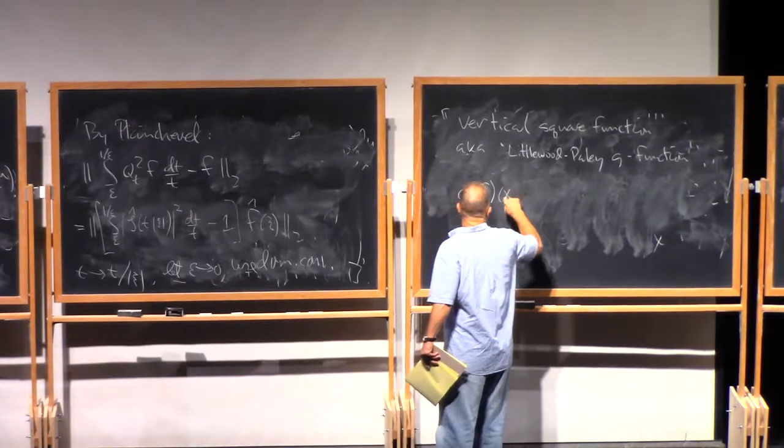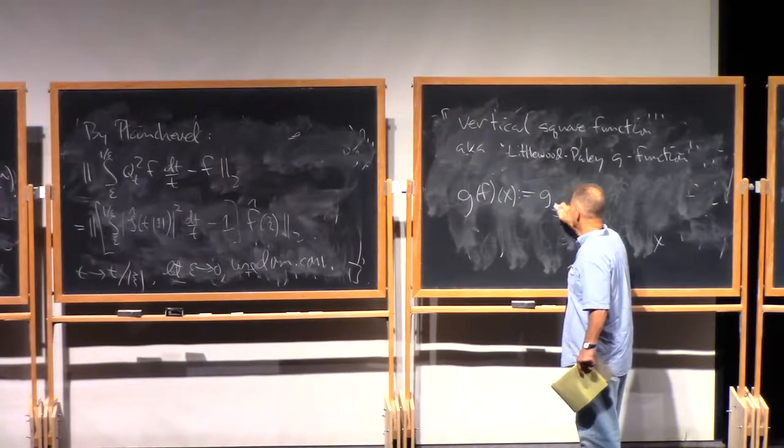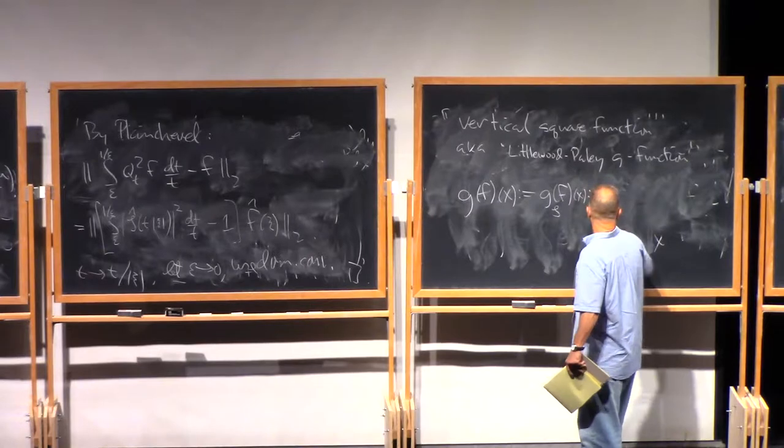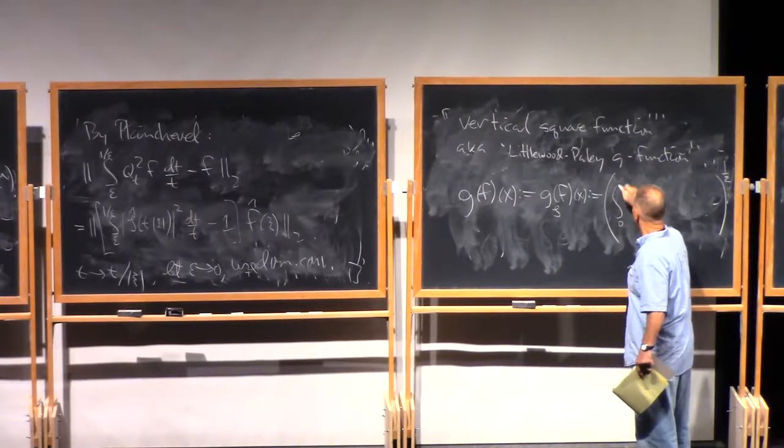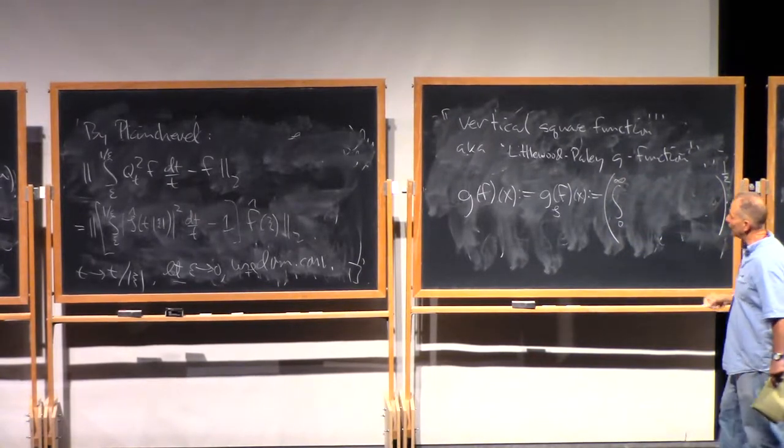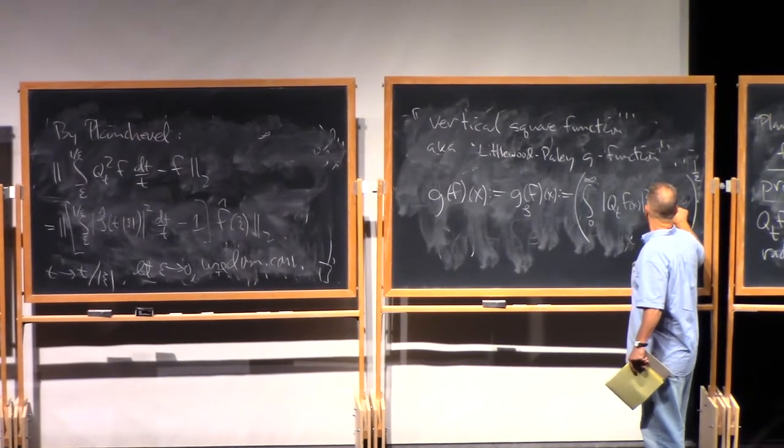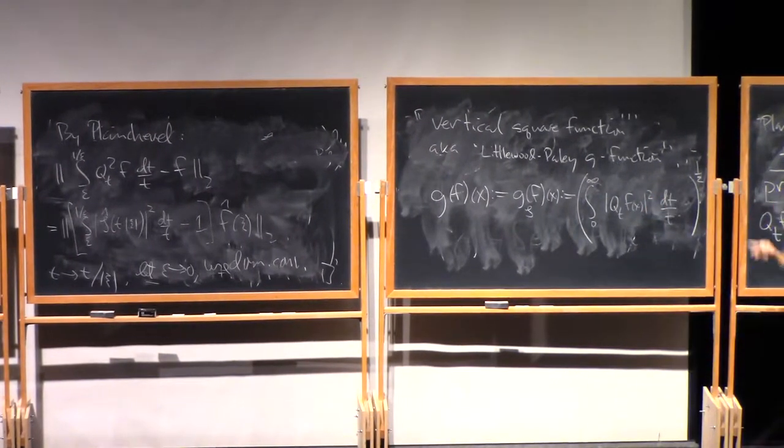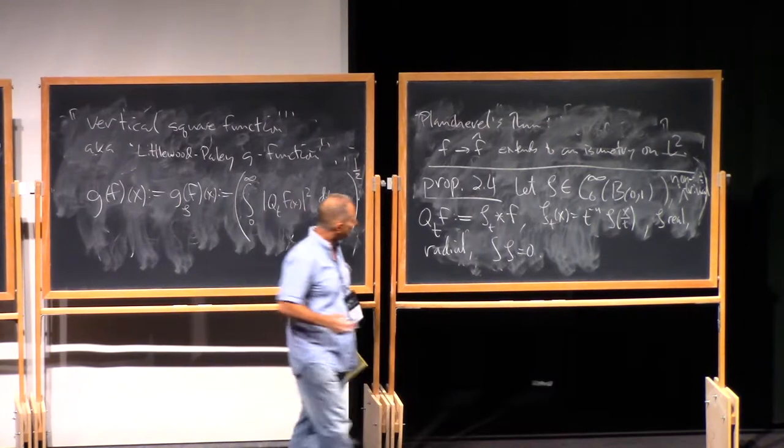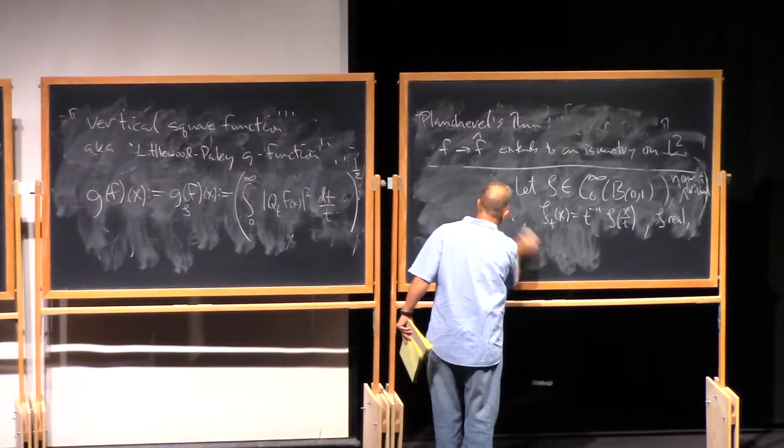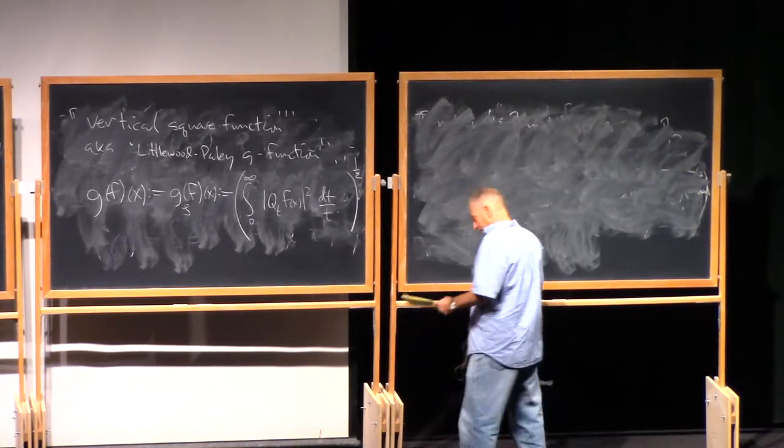Let's define this as follows. G of f of x, which for a given zeta, maybe I'll write it as g_zeta of f at x. This is gonna be the L2 norm on the half line of Q_t f of x squared dt over t, where Q_t, again, is zeta_t star f.